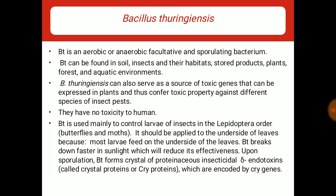Bacillus thuringiensis is abbreviated as BT, which is an aerobic or anaerobic facultative and sporulating bacterium. BT is found in soil, insects, their habitats, stored products, plants, forests, and aquatic environments. Bacillus thuringiensis ke andar toxic genes maujood hoti hain, jo ki particular pest ke against resistance show karti hain. Agar in genes ko hum isolate karke kisi plant ke andar insert karaate hain, to wo plant khud mein pesticidal protein generate karne lagega aur resistance show karega against a particular pest.